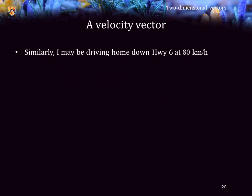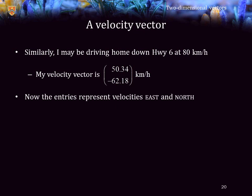Suppose I'm now at Tobermory, but now I'm leaving. I'm driving home down Highway 6 at 80 kilometers per hour. This tells me how fast I'm moving, my speed, but it doesn't tell me which direction I am moving. To represent my velocity vector, I do require a vector. In this case, I may be moving 50.34 kilometers per hour east and negative 62.18 kilometers per hour north. This represents my velocities going both east and north. Or, in this case, I'm moving generally in the southeast direction.